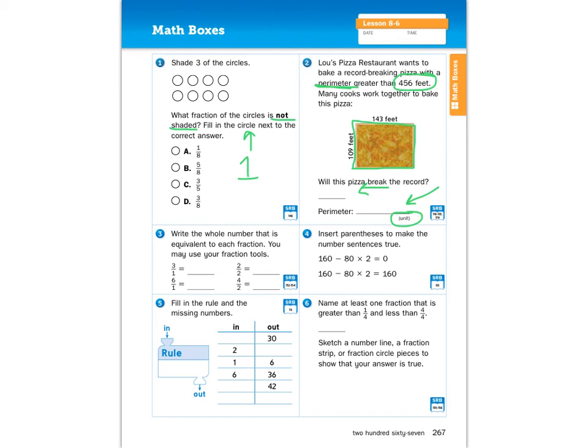Number three, write the whole number that is equivalent to each fraction. You may use your fraction tools. So if we have three over one whole, that means that's going to be three as a whole number. And then two over two, that's going to be one. And I'm going to let you guys take a stab at the next two on your own.